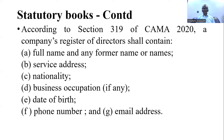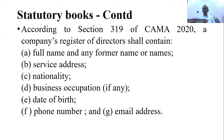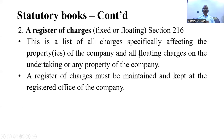According to Section 319 of CAMA, the company's register of directors shall contain the full name, service address, nationality, business occupation, date of birth, phone number, and email of each director. These are the details required to be maintained for each director of the company.